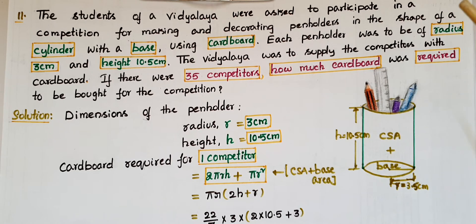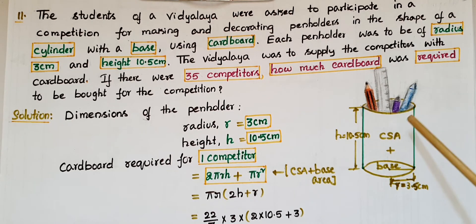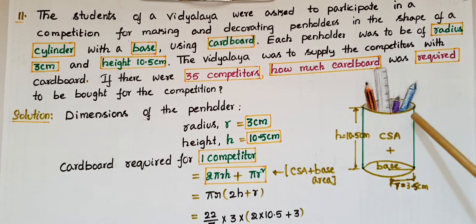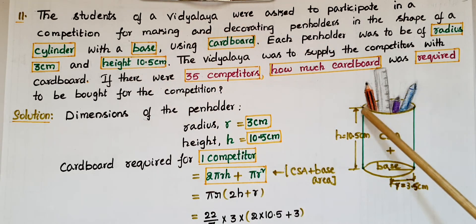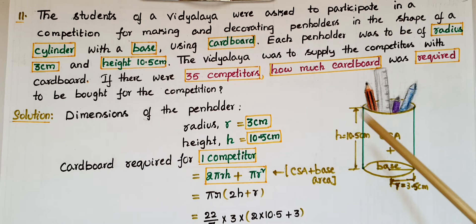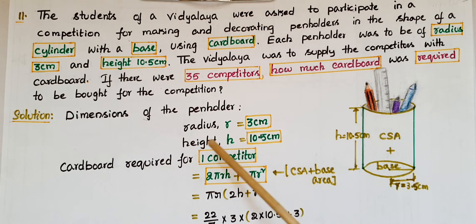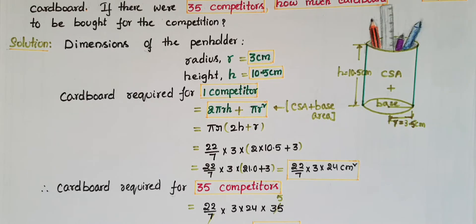So here they are using cardboard to make the pen holder, and the pen holder is in the shape of a cylinder with a base. The dimensions of the pen holder are given: radius r is equal to 3 centimeters, and height h is equal to 10.5 centimeters.